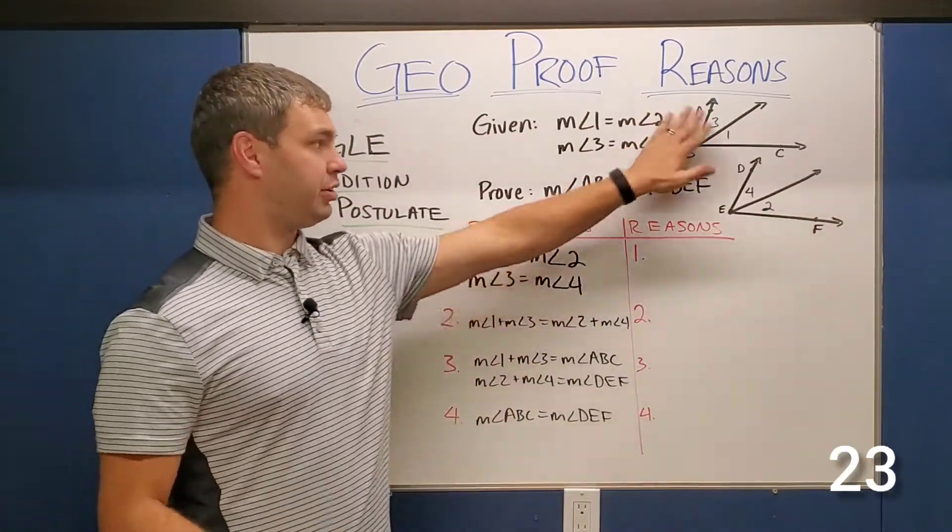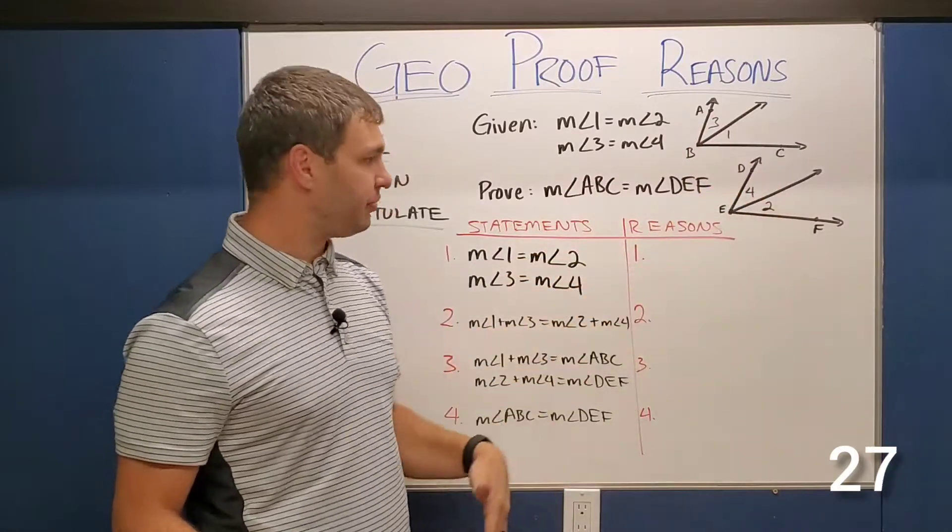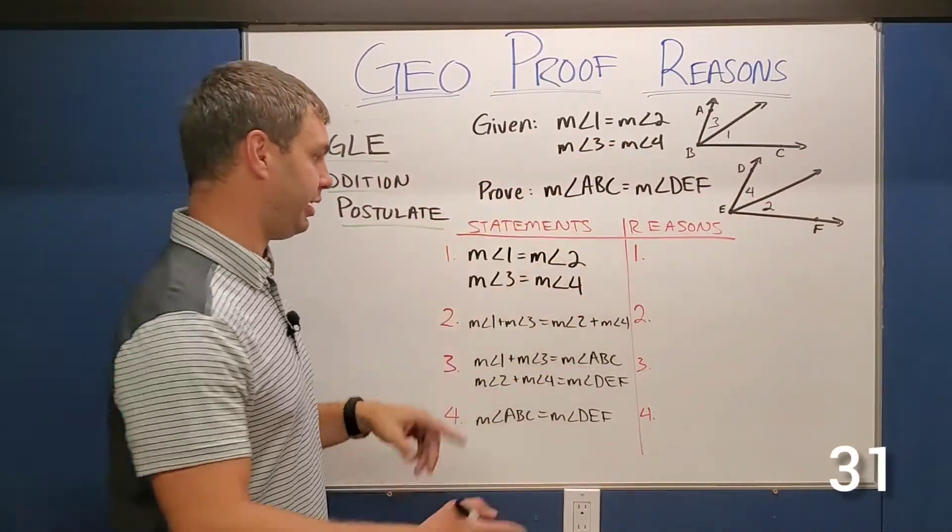All right guys, the first proof is kind of interesting. We have these two angles over here cut into these different parts. One, angle one, angle three, angle two and angle four. And then we are given, it says angle one is equal to angle two and angle three is equal to angle four.